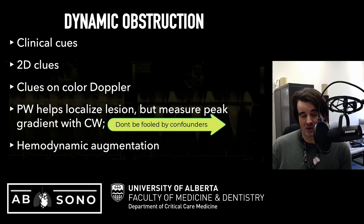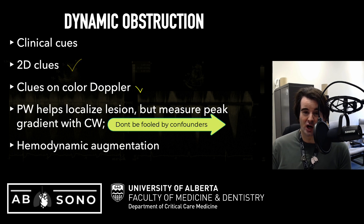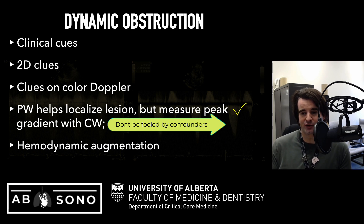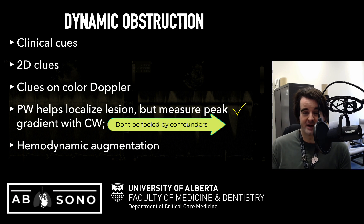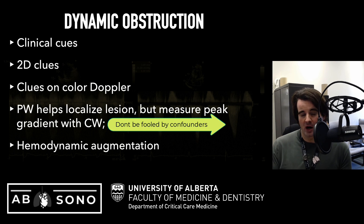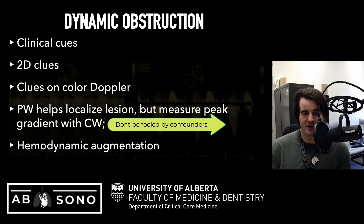So that's dynamic obstruction. We talked about clinical cues, evidence on 2D, M-mode, color Doppler, and spectral Doppler. We discussed using pulse wave to localize the lesion and measure the peak gradient. Don't be fooled by the presence of multiple gradients — if there's a mid-cavitary gradient, consider coincident SAM or aortic stenosis. This can be very complicated and may require close consultation with colleagues in cardiology and echo. And we discussed augmenting hemodynamics to improve forward flow, reduce regurgitation, and reduce dynamic obstruction to normalize physiology.